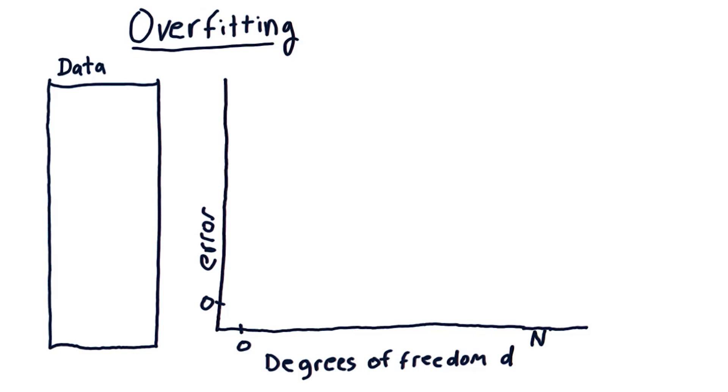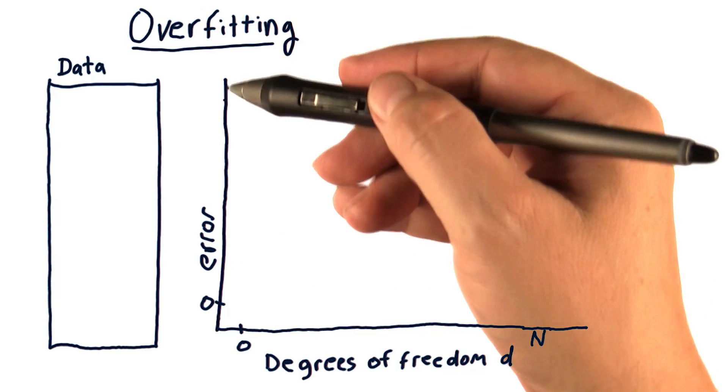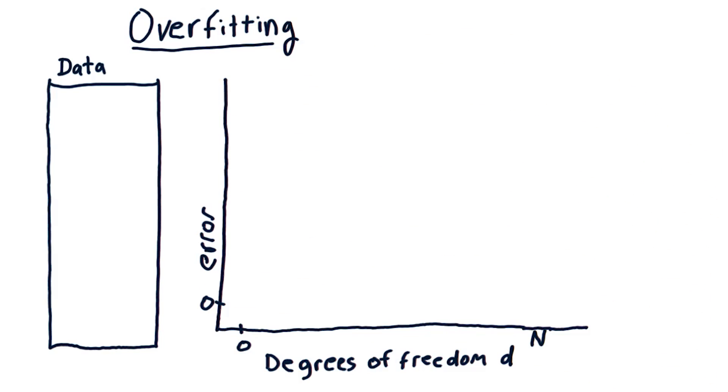Let's consider parameterized polynomial models where we can, one at a time, add additional factors like x, x squared, x cubed, x to the fourth, and so on. Let's create a graph where we have along the horizontal axis degrees of freedom, or d, the degree of our polynomial. And vertically here, we'll have the error of our model.